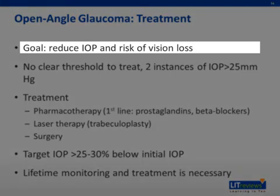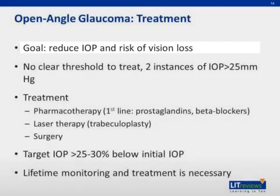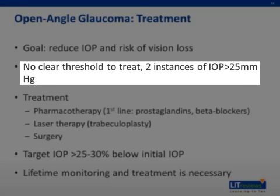The goal of therapy in open angle glaucoma is to reduce the intraocular pressure and decrease the risk of progression to visual field loss and optic nerve changes. As open angle glaucoma tends to be bilateral but can be very asymmetric, monocular treatment may be indicated initially. There is no clear threshold for initiating treatment; however, following two instances of intraocular pressure greater than 25 mmHg, most ophthalmologists would initiate therapy.